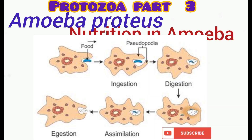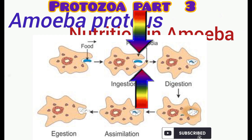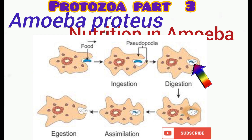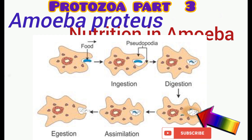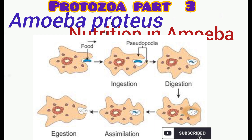Let's discuss nutrition in Amoeba. When an amoeba gets close to a food particle, it stretches forth its pseudopodia, engulfing the food particles, and eventually a food vacuole is formed. Digestion occurs in the food vacuole with the aid of enzymes, and eventually assimilation takes place where essential materials are absorbed into the body. Unwanted material is ejected or discharged.